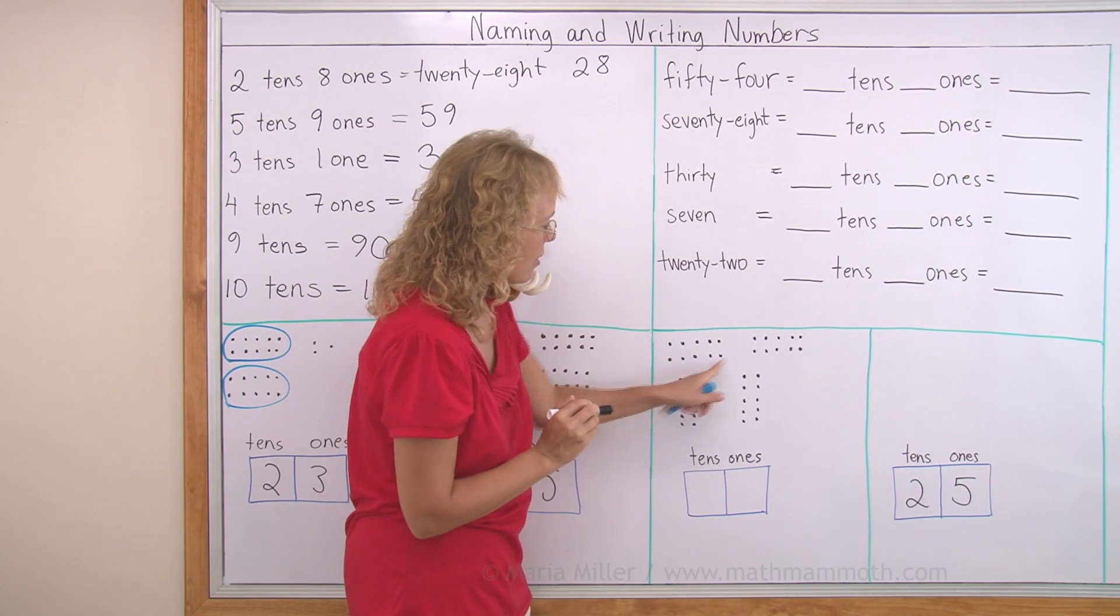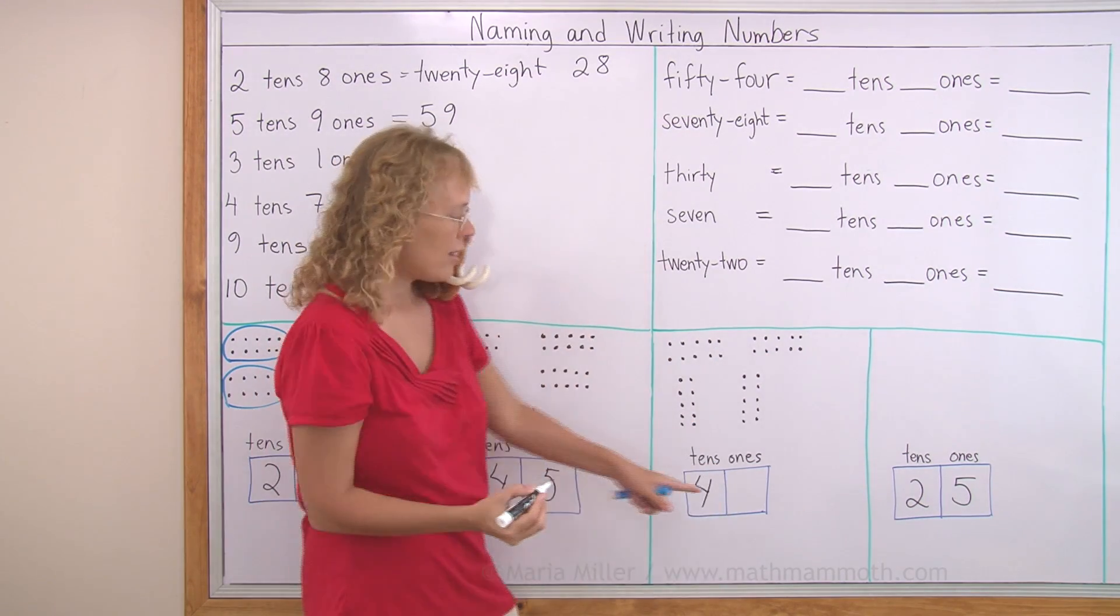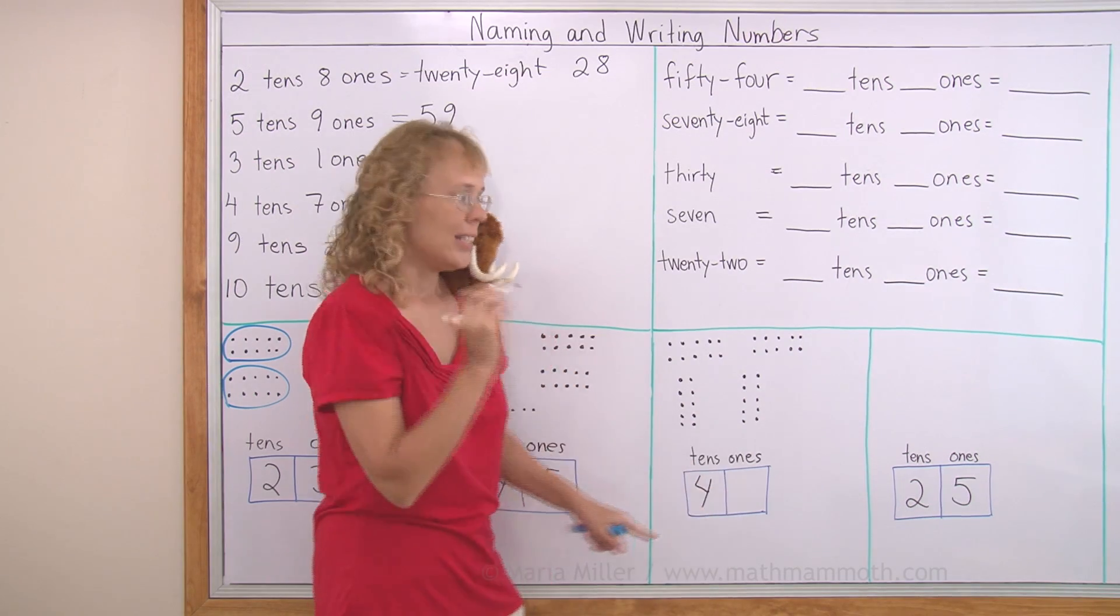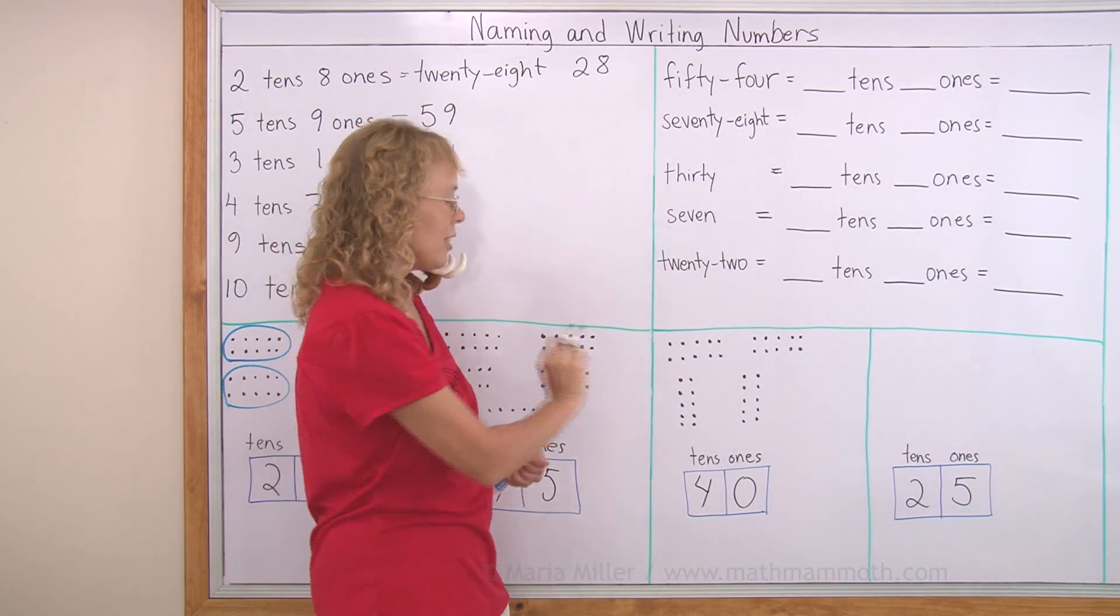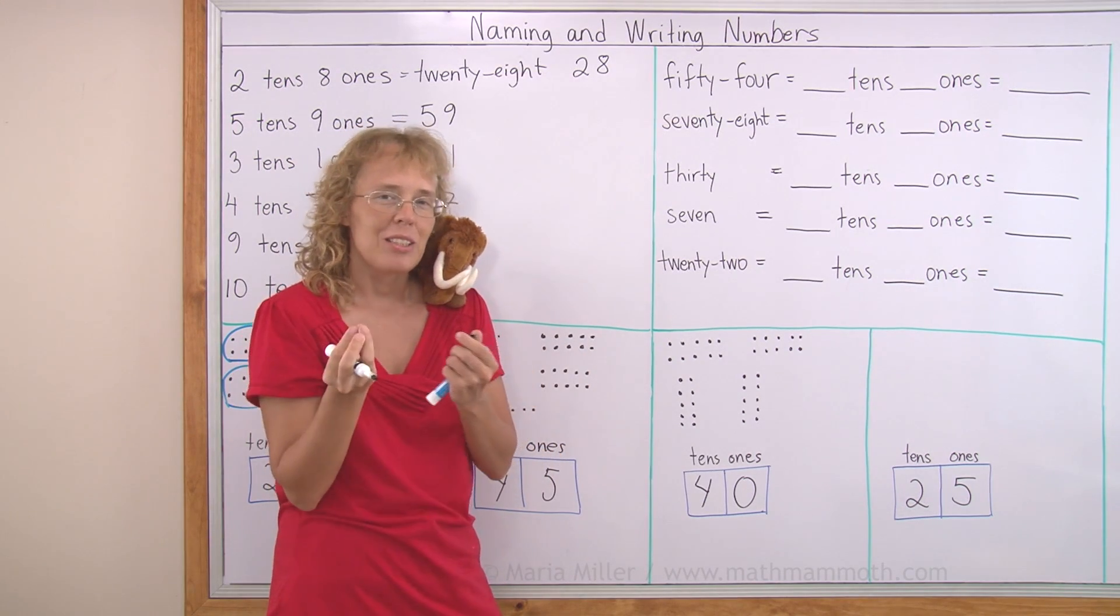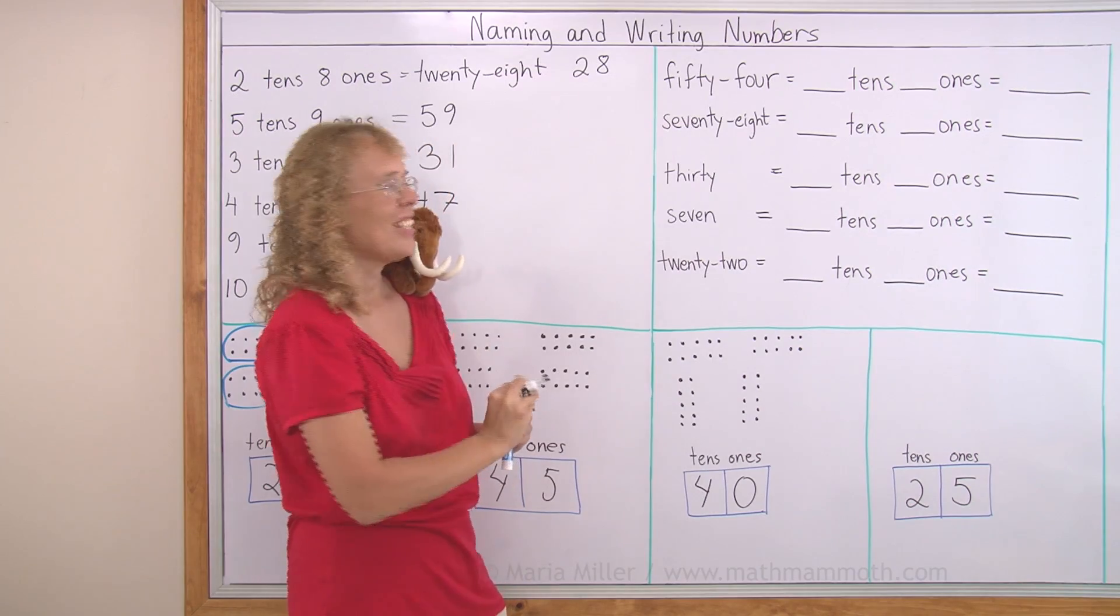Over here, again, 4 groups of tens. And then, over here we need to put 0 because there are no ones. 4 tens, 0 ones. What number is it? How do we call it? 40. 4 tens is 40.